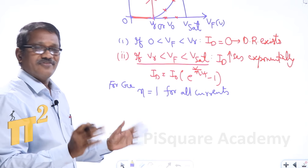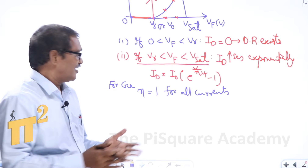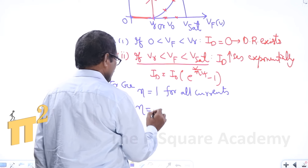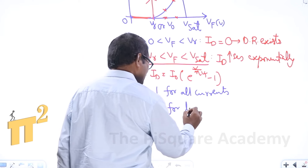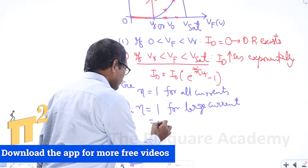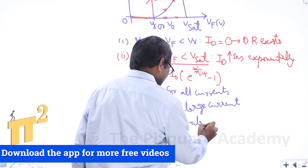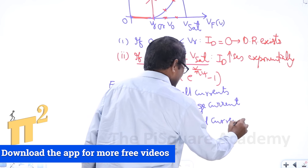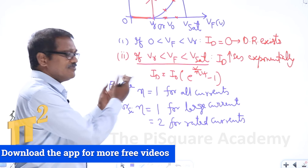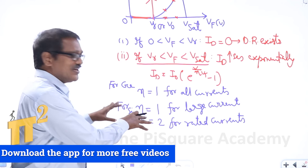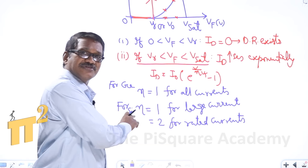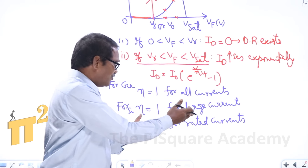Eta is equal to 1 for all currents for germanium, whether small, rated, or high currents. Whereas for silicon, eta is equal to 1 for large currents and 2 for rated currents. In general, since the current through the diode is always rated, we substitute eta = 2 for silicon diode and eta = 1 for germanium diode.